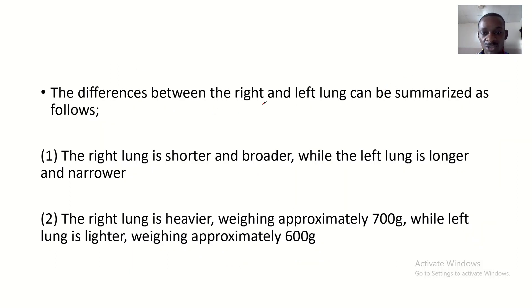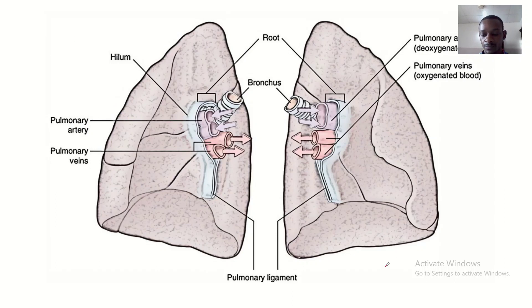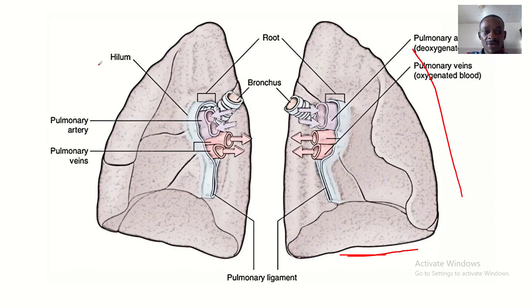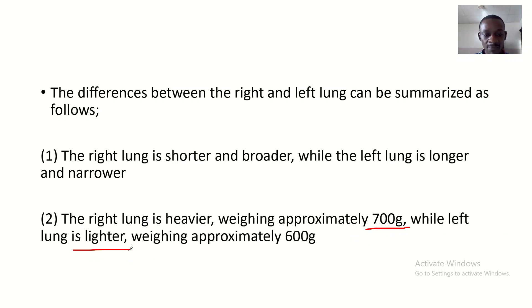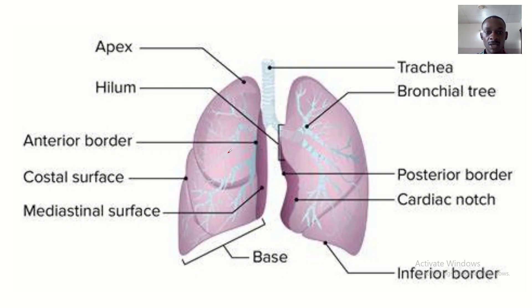The differences between the right and the left lung can be summarized as follows: the right lung is shorter and broader while the left lung is longer and narrower. On our right here is actually the left lung, so the left lung is longer and the right lung is shorter and broader. Also, the right lung is heavier because it's broader — it weighs about 700 grams — while the left lung is lighter, weighing approximately 600 grams.